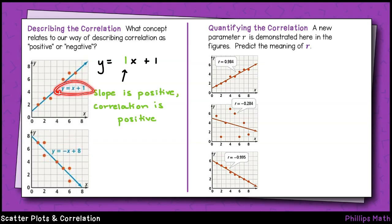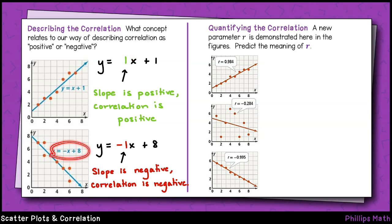Notice in this first scatter plot, the equation y equals x plus 1. The slope is positive 1. The linear function in blue is an increasing function. Notice in the second scatter plot, the equation y equals negative x plus 8 describes a decreasing function shown in blue. This time, the slope is negative 1. In each case, the sign of the slope, positive or negative, of the equation describes the type of correlation between the two variables. A positive slope for a positive correlation and a negative slope for a negative correlation.